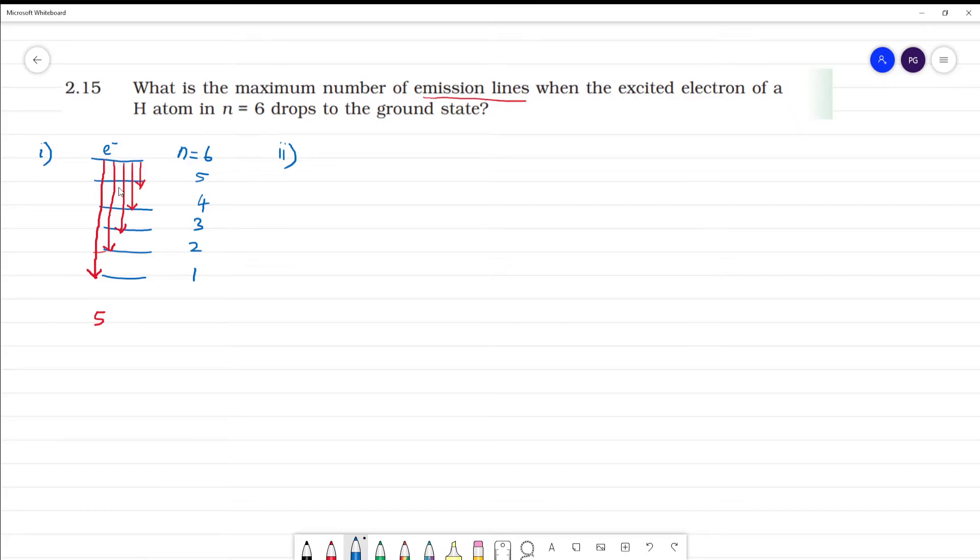Now n equals 6. The electron from n equals 5 will come. For the second case, the excited electron goes to ground state n equals 5. From 5 to 1, 3, 4. So how many emission lines? 4 emission lines.